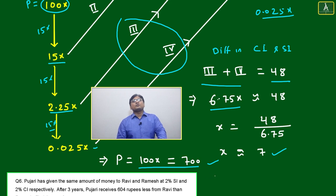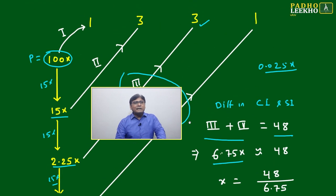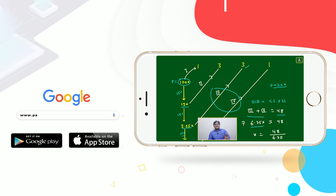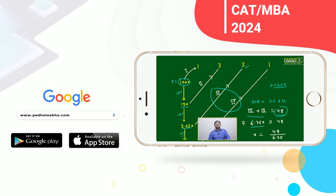If you put 700 rupees for three years under CI and another scheme for three years under SI, the difference in the interest under CI and SI you will get is 48.